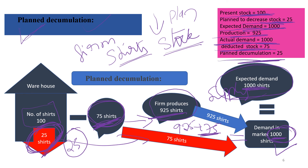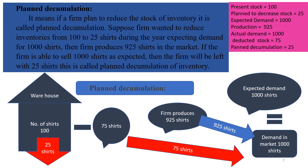So the planned stock remaining is 25 shirts. In the exam, when asked about planned accumulation and decumulation for 4 marks, you must write planned decumulation as a second paragraph. It means: if a firm plans to reduce the stock of inventory, it is called planned decumulation. Suppose a firm wants to reduce inventory from 100 to 25 shirts during the year expecting demand of 1000 shirts, then the firm produces 925 shirts. If the firm is able to sell 1000 shirts as expected, the firm will be left with 25 shirts — this is called planned decumulation of inventory.